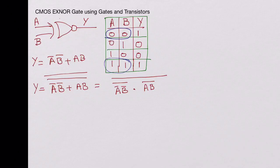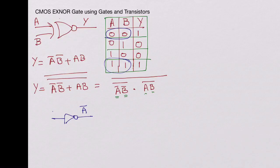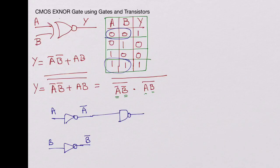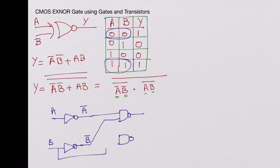To realize this, we need Ā, B̄, A, and B. We use two inverters: one to get Ā from A, and another to get B̄ from B. The first NAND gate takes inputs Ā and B̄, the second NAND gate takes inputs A and B, and finally there is a third NAND gate combining both outputs. This is how you realize the XNOR gate using gates.